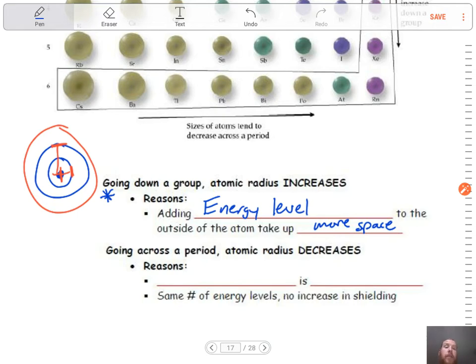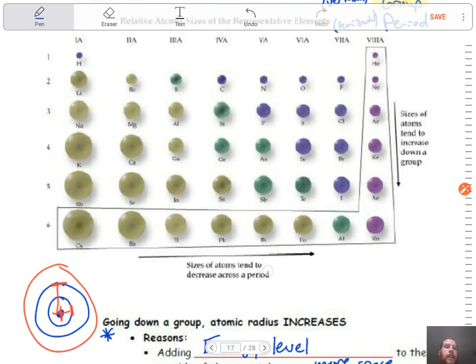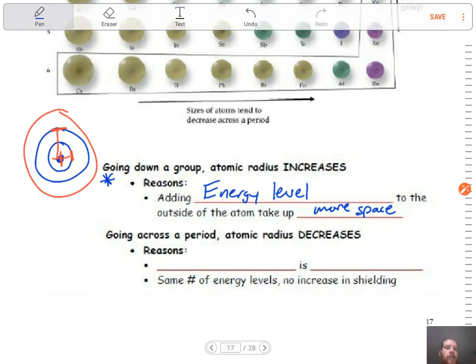With atomic radius, as you go down, the group trend is more important than the period trend. Now there is still a period trend. As you can see, you go from over here with your alkali metals all the way over to the right with your noble gases. What's happening? Well, you can see that the sizes are getting smaller.